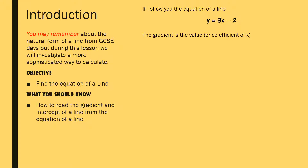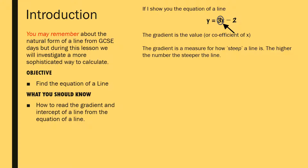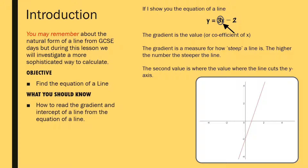The gradient, or slope of the line, is the value or coefficient of x — in this case plus 3. The gradient is a measure of how steep the line is: the higher the number, the steeper the line, and negative gradients slope in the opposite direction. The second value is where the line cuts the y-axis. As you can see on the graph of y equals 3x minus 2, the minus 2 is where it cuts the y-axis. As long as the equation is in that form, you can read the gradient as 3 and the intercept as minus 2.